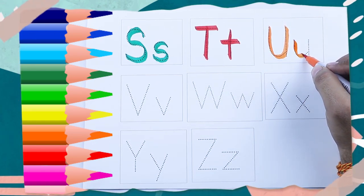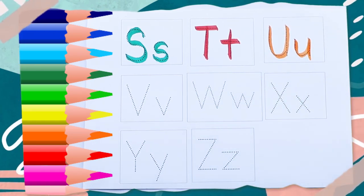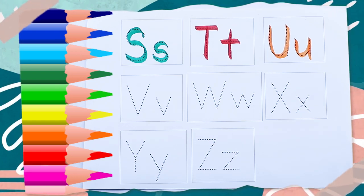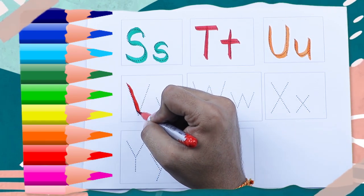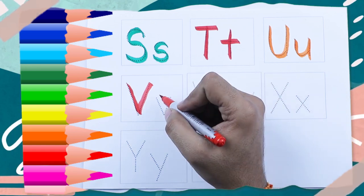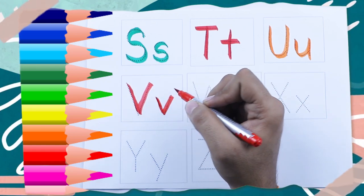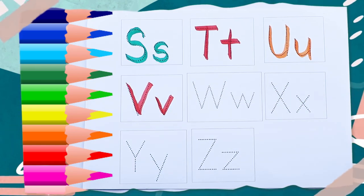Orange color small U, U for umbrella. Red color capital V, V for van. Red color small v, v for van.